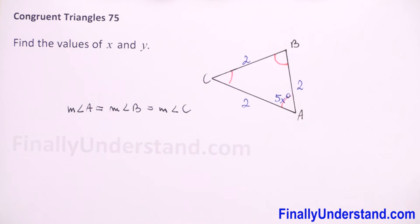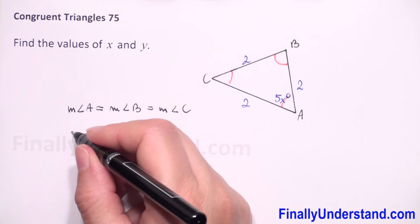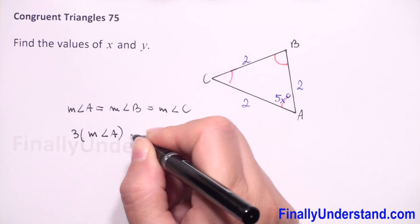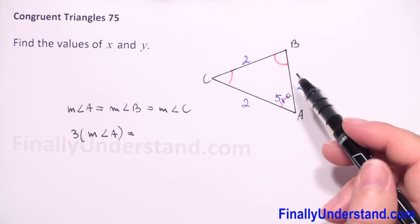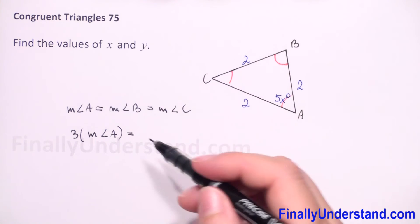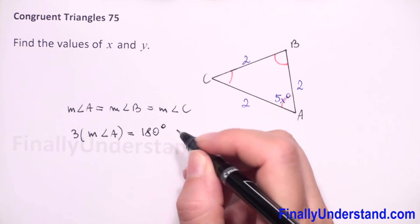So we can write that the measure of this triangle is 3 times measure of angle A, and we know that the sum of interior angles of a triangle is 180 degrees.